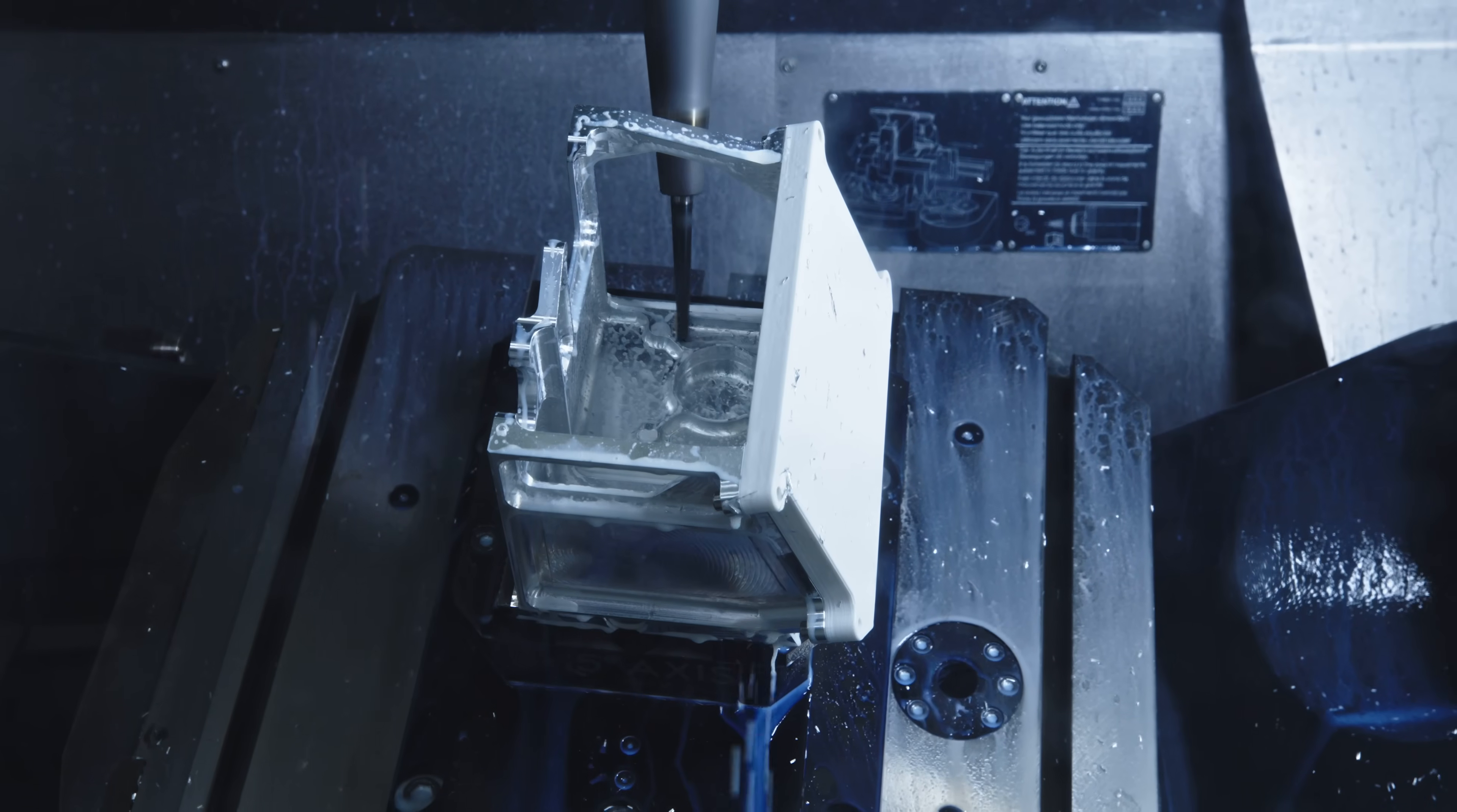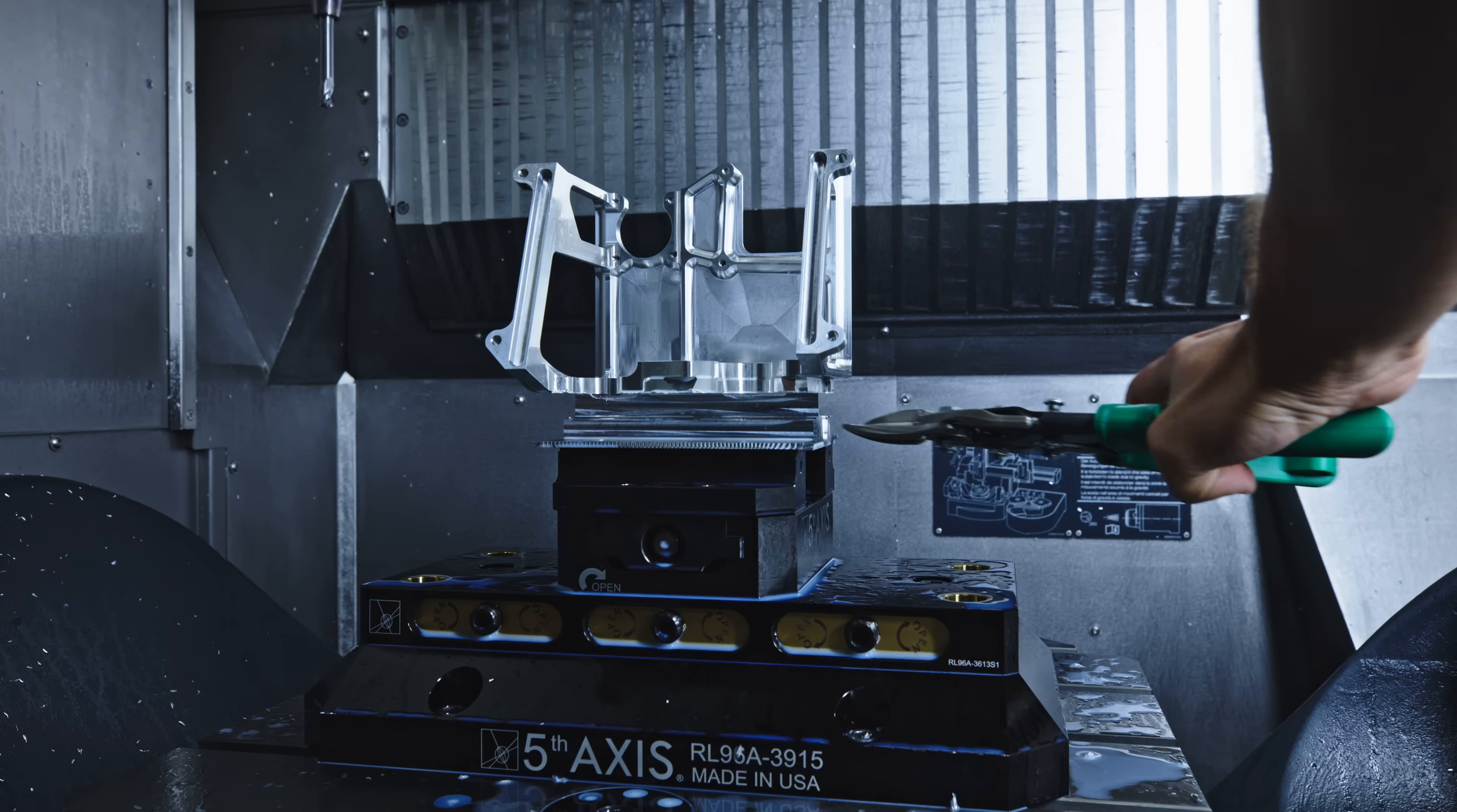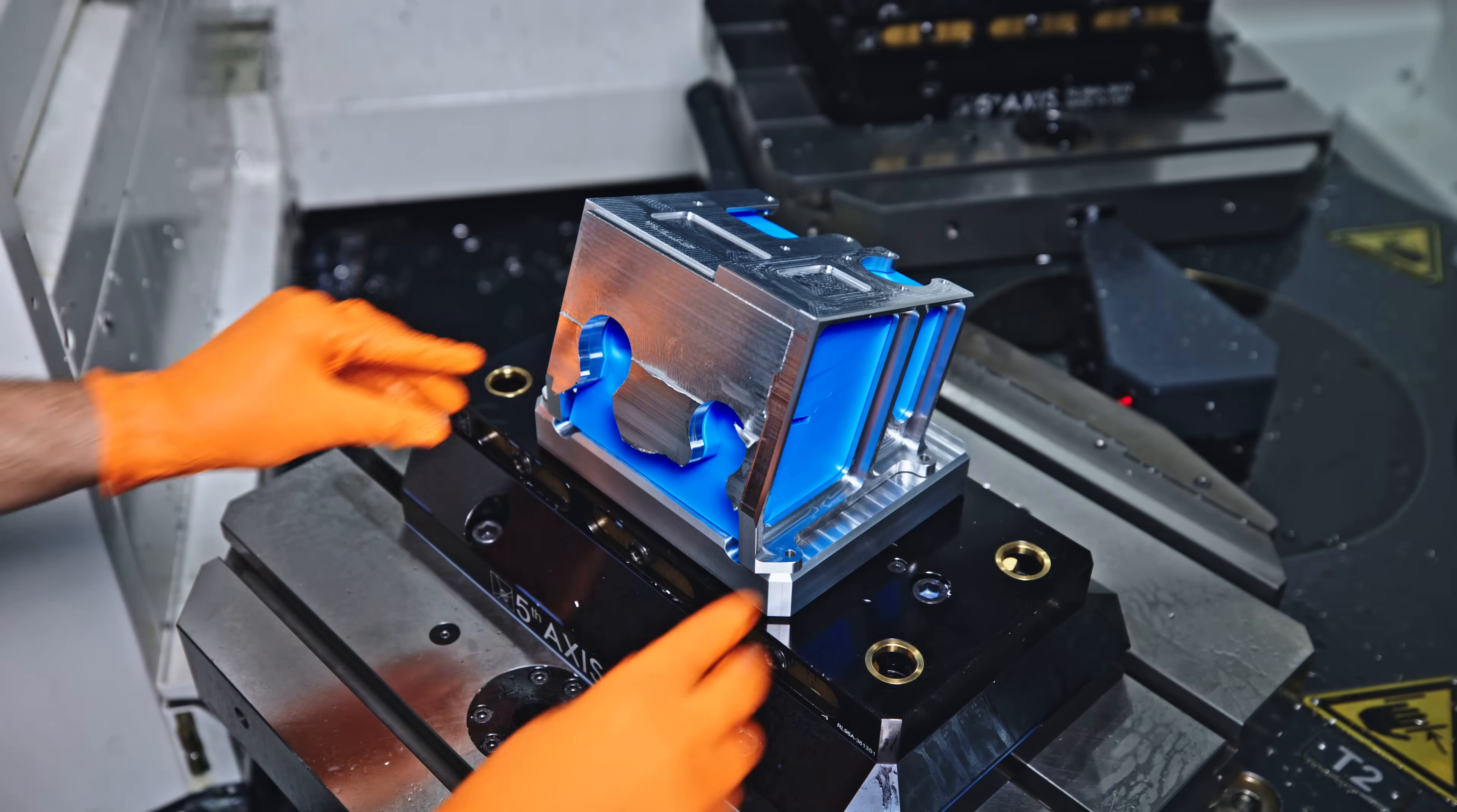After the windows are finished, we'll deburr and reach areas we couldn't access before. The final step in operation 1 is separating the finished part from the base material, leaving a 10-thousandths inch tab. This cuts our second operation down to about 15 minutes. To support the part, we have a 3D printed filler block to reduce vibrations and improve surface finishes.